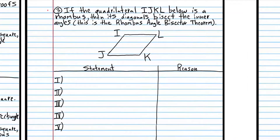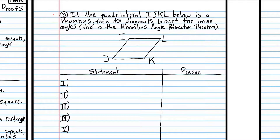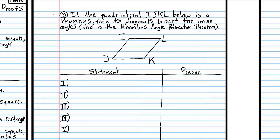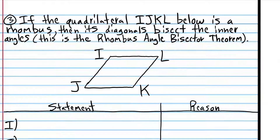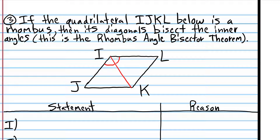On to number three. If the quadrilateral IJKL below is a rhombus, and we know that this quadrilateral is a rhombus, then its diagonals bisect the inner angles. What that means is if you draw a diagonal, this angle is congruent to this angle, and this angle is congruent to this angle. All four of those angles are actually congruent, but we're just trying to prove that the diagonal bisects those two angles.